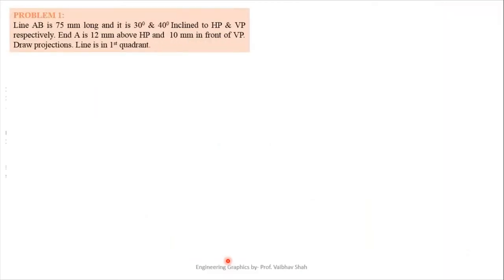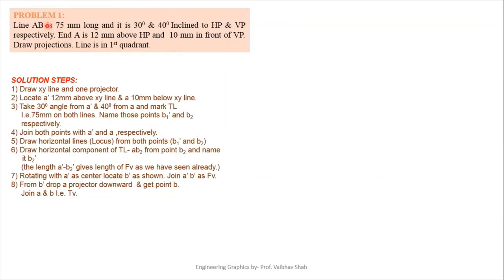Problem 1: Line AB is 75 mm long and is 30 degrees and 40 degrees inclined to HP and VP respectively. End A is 12 mm above HP and 10 mm in front of VP. Draw projections and assume line in first quadrant. Here: true length (TL) = 75 mm. Theta = 30 degrees (inclination with HP), Phi = 40 degrees (inclination with VP). Before starting, always first solve the example for the point.